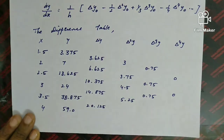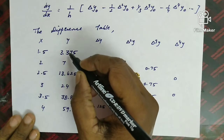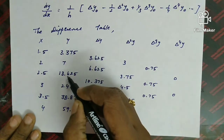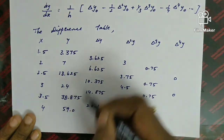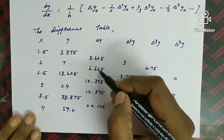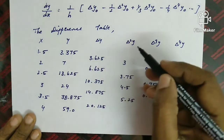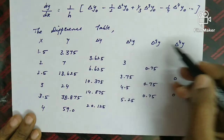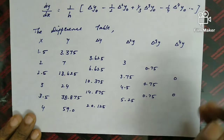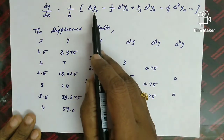In the difference table, we have x data and y data. The first differences are computed between consecutive y values (e.g., 7 − 3.375, 13.625 − 7, 24 − 13.625). The second difference is 6.625 − 3.625 = 3. We compute Δ², Δ³, and Δ⁴ — and Δ⁴ = 0.